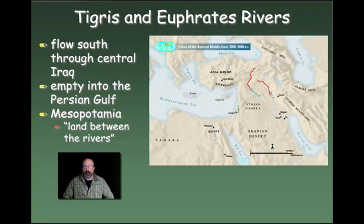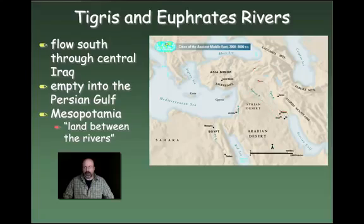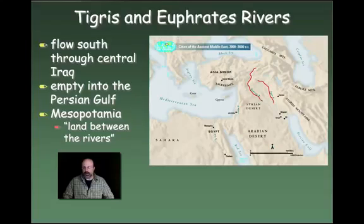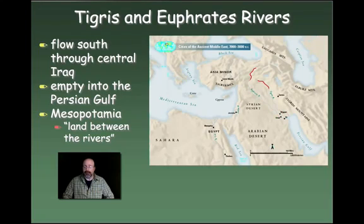Let's start off with the Tigris and Euphrates rivers. They flow south through central Iraq and empty into the Persian Gulf. Mesopotamia, where the two rivers flow, actually translates as 'land between the rivers.' Mesopotamian civilization was able to exist because both rivers often flooded. When the rivers flooded, they deposited rich soil, and that soil made the land very good for agriculture. So Mesopotamia is literally the land between the Tigris and Euphrates rivers, where there had once been lots of fertile soil.